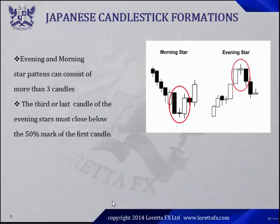Evening and morning star patterns can consist of more than three candles. The third or last candle of the evening star must close below the 50% mark of the first candle. Likewise, the third or last candle of the morning star must close above the 50% mark of the first candle.